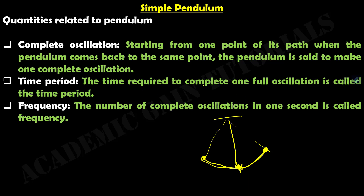The time period is the time required to complete one full oscillation. The frequency is the number of complete oscillations in one second. I hope you understand the relation between circular motion and simple harmonic motion, and this concept of simple pendulum. In our next video, we will broadly discuss simple pendulum and derive its equation. Please like this video and subscribe to our channel. Thank you.